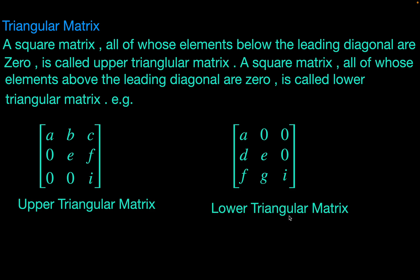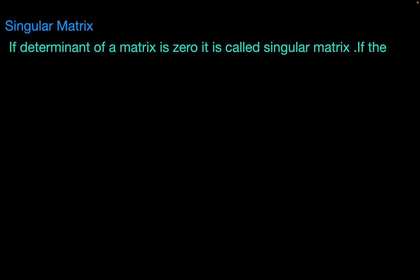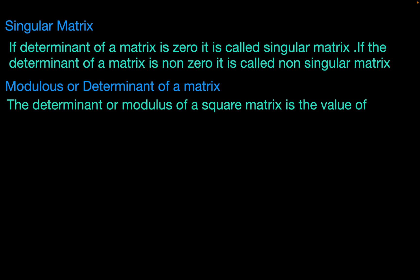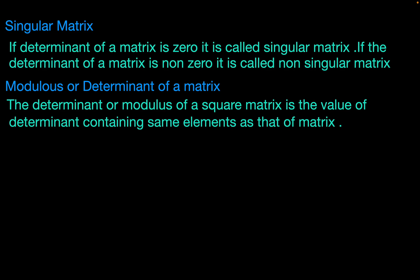If the determinant of a matrix is 0, it is called a singular matrix. If the determinant of a matrix is non-zero, it is called a non-singular matrix. The determinant or modulus of a matrix is the value of the determinant containing the same elements as that of the matrix.